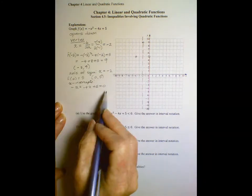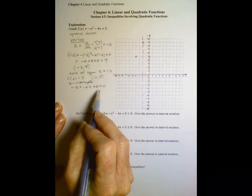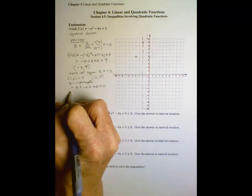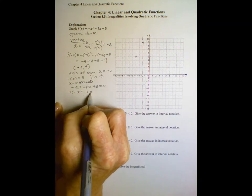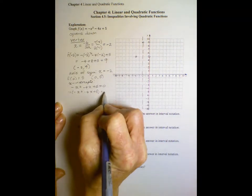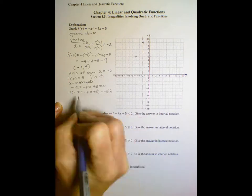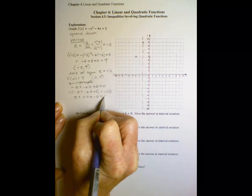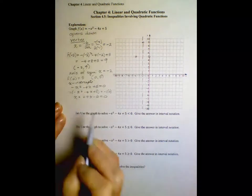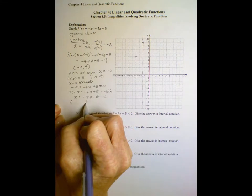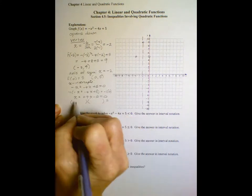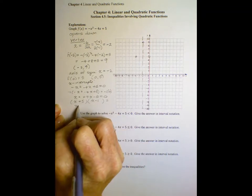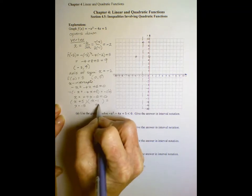Now, this will factor, but it'll factor a lot nicer if this is a positive one. So I'm going to multiply both sides by negative 1. And that'll change the signs to what I want. I want positive x squared. So then it'd be plus 4x minus 5 equals 0. That's just a little trick to get rid of a negative in front of the x squared and to make this part easier. So that factors to x plus 5, x minus 1.